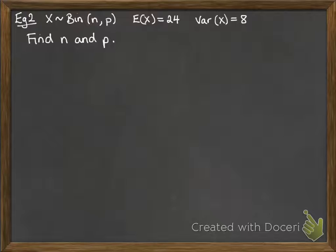Okay, example number 2. This one's working backwards. So X follows a binomial distribution with n trials, probability of success is p. But this time we know the expectation and the variance, and we're going to work out n and p from there.